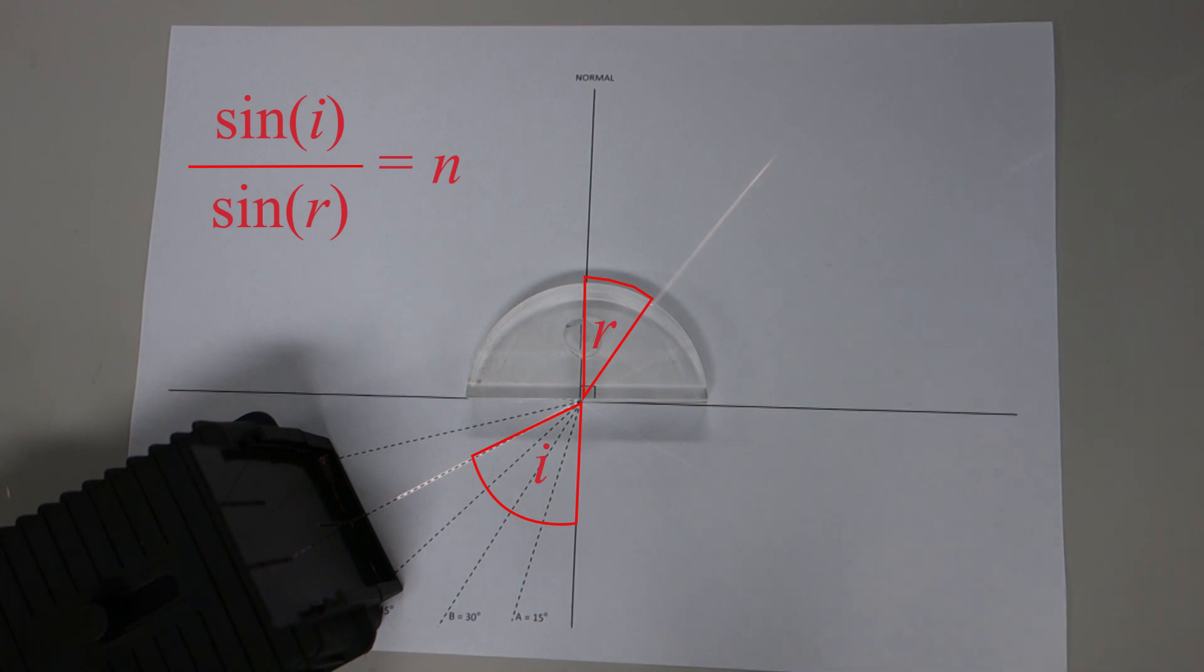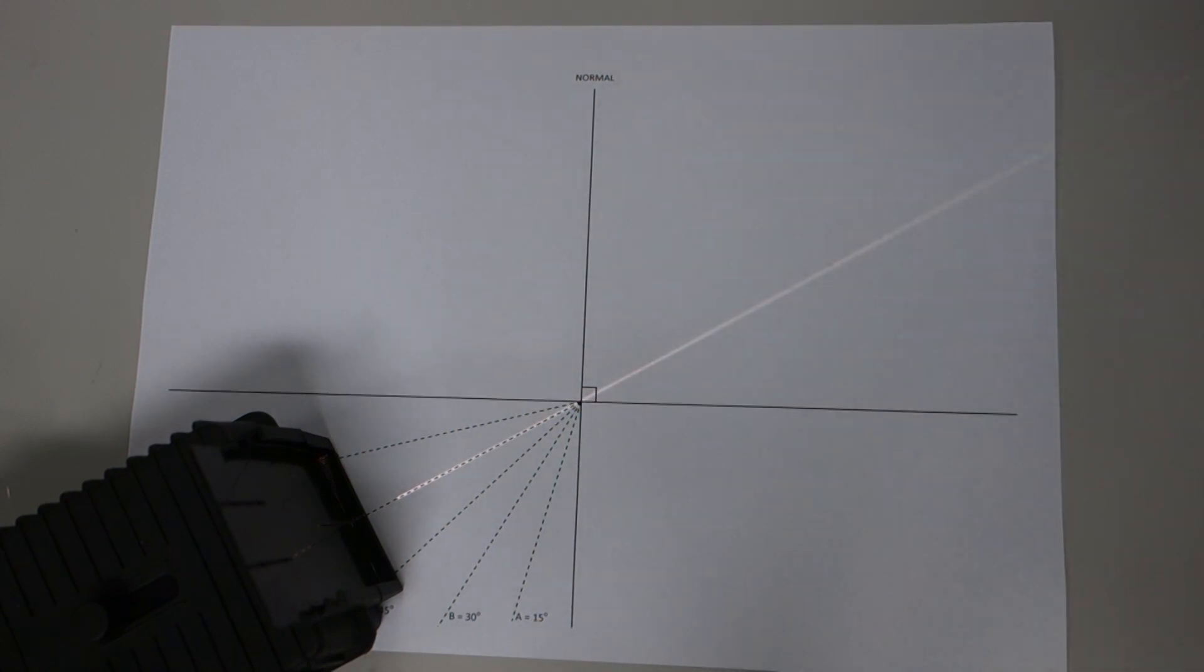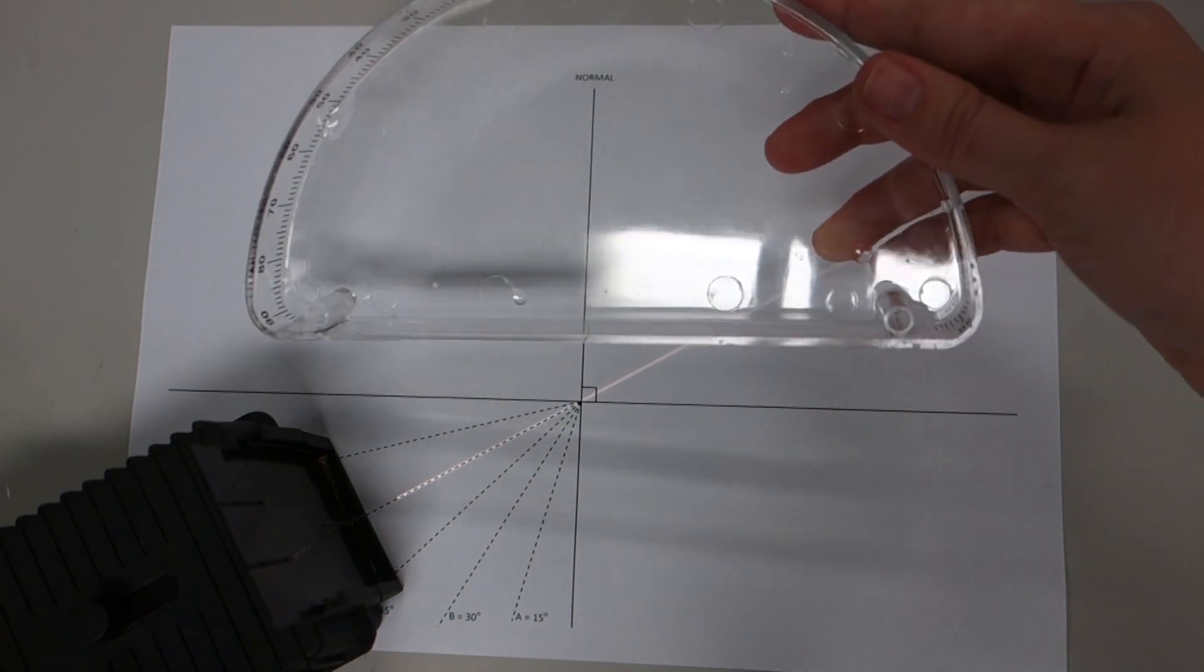The next exercise, or an extension to this exercise, is to investigate the angle of refraction or the refractive index of some other substances. To do that, we will use one of these refraction tanks.